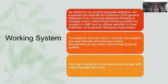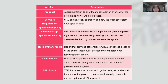Hello, my name is Esther Wong Qingya, matrix number 69636. I want to introduce our working system. As stated in our project proposal objectives, we expect the website for Institution of Engineers Malaysia from University Malaysia Pahang to manage their events and serve as an online ticket booking system for UMP students as well as an official website for their organization. The features in mind for the website are user-friendly with similar functionality to other online ticket booking systems, with a simple user interface using clear language. A proposal is documentation to brief stakeholders on an overview of the project and its execution.